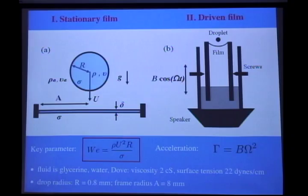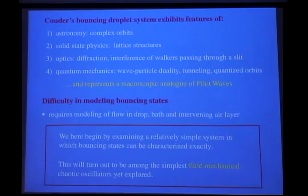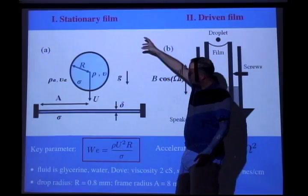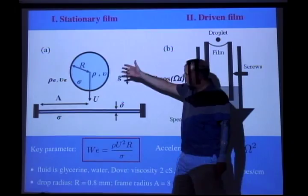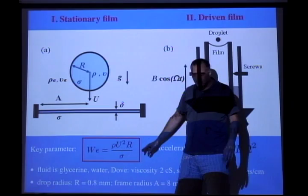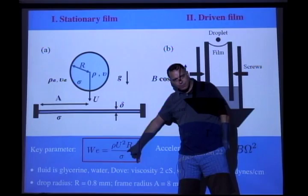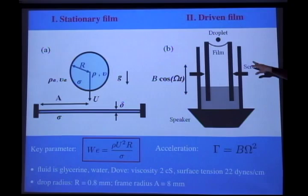The two problems: first, what's the criterion for breakthrough if we have a drop hitting a soap film? It's the same fluid in the drop and in the film, and we expect the key parameter here — we don't expect the viscosity to be dominant — we expect the Weber number, which is basically the ratio of the kinetic energy of the drop to the surface energy.